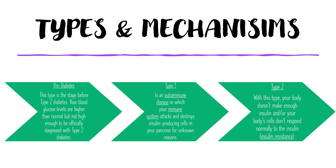There are two types of diabetes, but before that, there is a stage known as the pre-diabetic stage, in which the blood glucose levels are higher than normal, but not high enough to be officially diagnosed with type 2 diabetes. Whenever you intake something, the glucose is released into the blood, and to counterbalance that, a certain amount of insulin is released. This is the normal process.